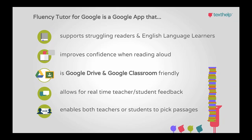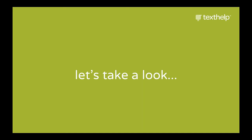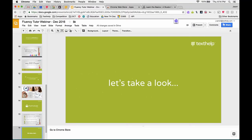Let's go into demo mode. I'm starting at the beginning and rolling through at a good pace. The first thing you have to do is get Fluency Tutor. If you're using G Suite for Education, you get it from the Chrome Web Store. If you're a Google administrator with access to the Google Admin Console, you can push Fluency Tutor out to all the kids so the next time they log in to Chrome or open their Chromebook, they'll have access to it. Otherwise, you just get it from the Chrome Web Store.